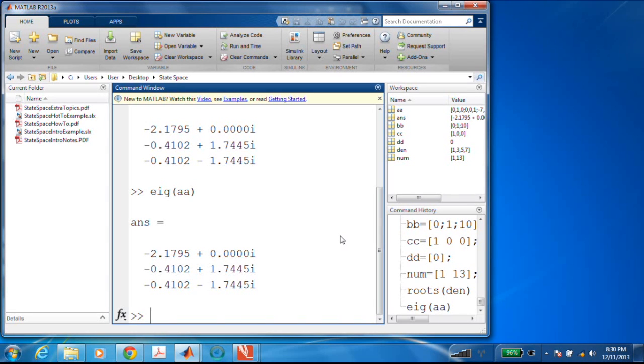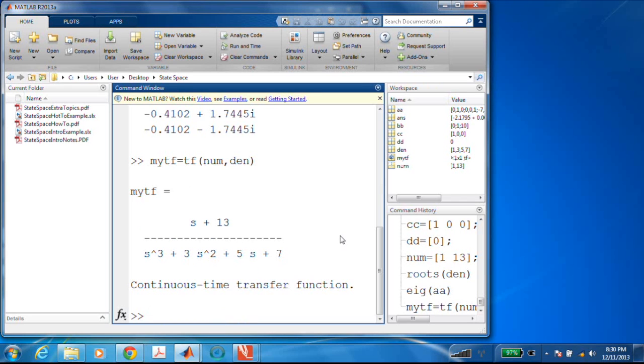Let's use a couple other MATLAB features to create a state space object and a transfer function object. So let's do the transfer function object first. I'll call it my TF and we'll use the TF command in MATLAB and look what it created. It creates a transfer function that actually kind of looks like the transfer function that I wrote down on the previous slide.